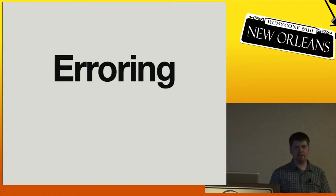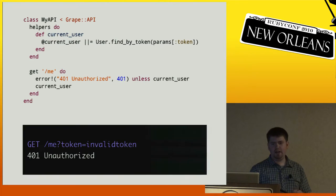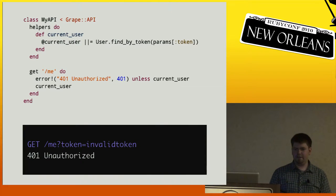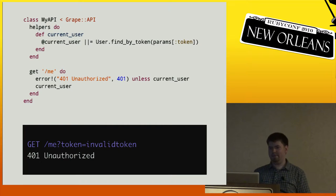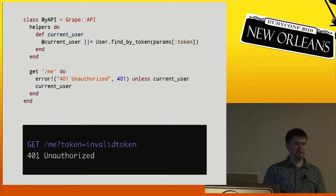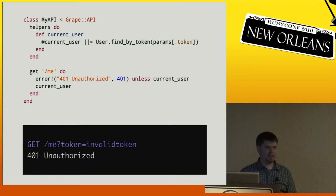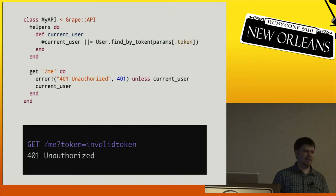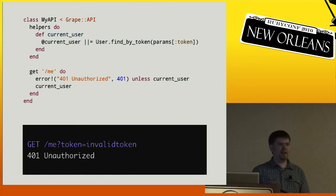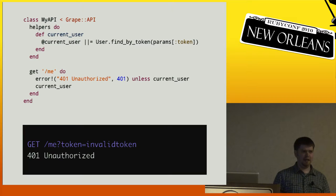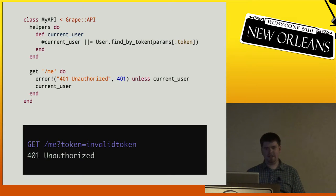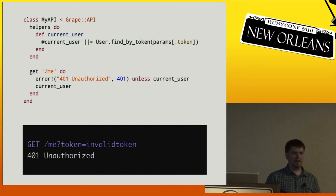Finally, you can handle API errors in a consistent manner. All you do is call 'error!' with a message and an HTTP status code — by default the status code is 403. So if someone tries to create a record and there's a validation error, you just error out with the validation message and it'll be handled consistently. It's a quick one-liner that consistently displays API errors across your system.